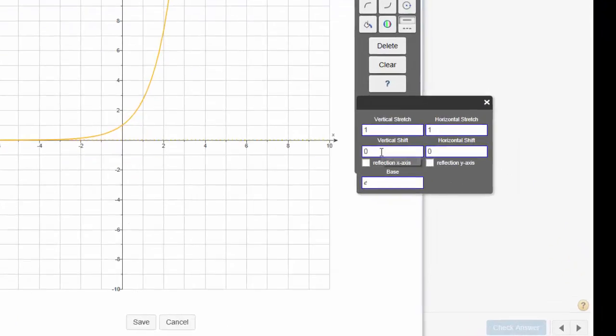Now, the vertical shift is your value of k. In this problem, k is negative 6. So I type negative 6 and when I move to the next box, notice that just dropped the graph by 6.